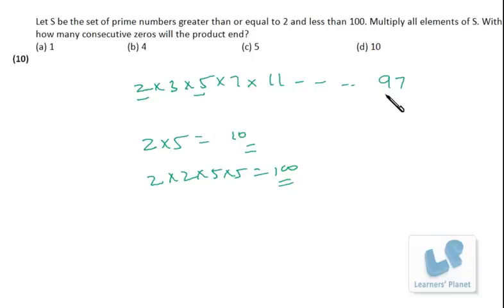So we won't get any more 2 and 5 combinations. There will be a single 2 and 5 combination, so there will be a single 0 at the end of the product. As simple as that. You need not multiply all the numbers. Thank you.